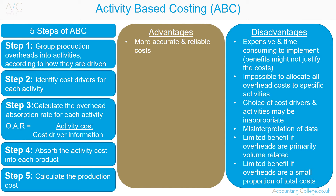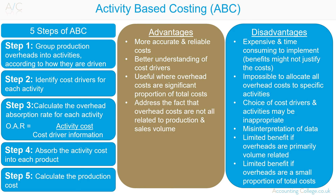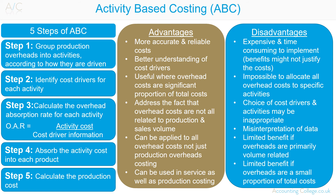Advantages of activity-based costing: it provides more accurate and reliable costs because it focuses on the cause-and-effect linkage of costs and activities, leading to more realistic pricing and improved cost-plus pricing. This leads to more realistic margins for sales strategies and R&D decision making. It gives a better understanding of cost drivers, leading to better cost control and more realistic budget setting. It is useful when overhead costs are a significant proportion of total costs, addresses the fact that overhead costs are not all related to production and sales volume, can be applied to all overhead costs (not just production), and can be used in service as well as production costings.